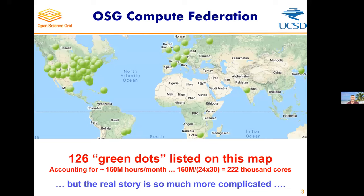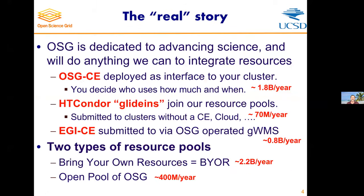What it looks like is there are 126 green dots listed on this map, accounting for about 160 million hours, which translates into about 222,000 cores. But the real story is actually much more complicated than that, because we have a variety of different ways that a resource can be shared. This talk is largely about the open pool.